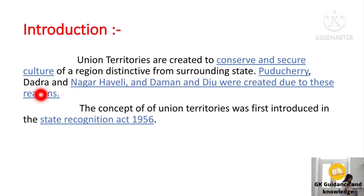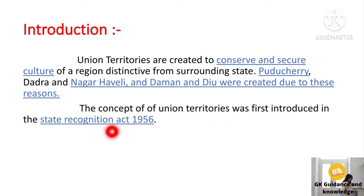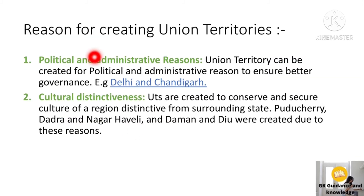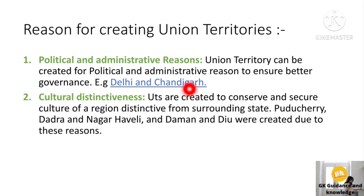The concept of union territories was first introduced in the State Reorganization Act 1956. The first reason behind creating union territories is political and administrative reasons — union territories can be created to ensure better governance, for example Delhi and Chandigarh.